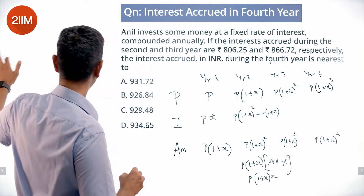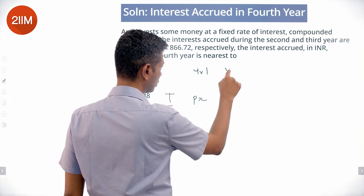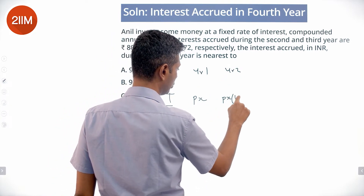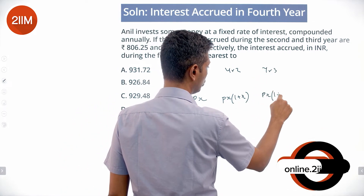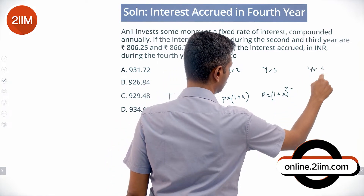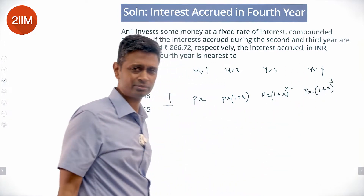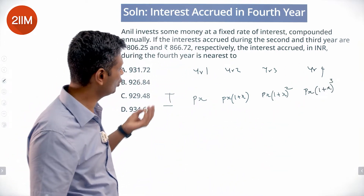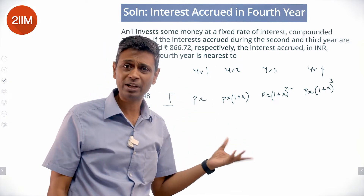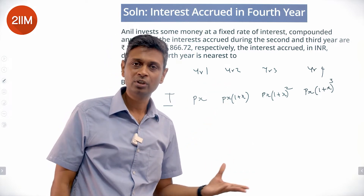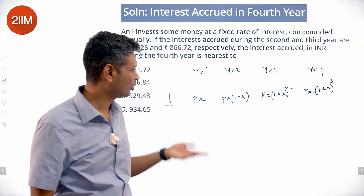Simply tracking the interest: year 1 is P·x, year 2 is P·x·(1+x), year 3 is P·x·(1+x)². The interest accrued in each year is basically a higher base multiplied by the same rate of interest. If the principal at the beginning of each year is in a geometric progression, so too will the interest be.